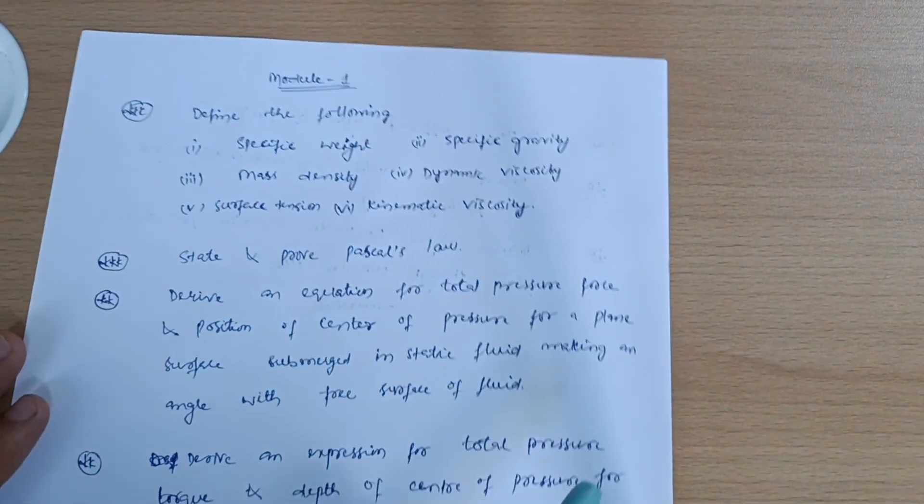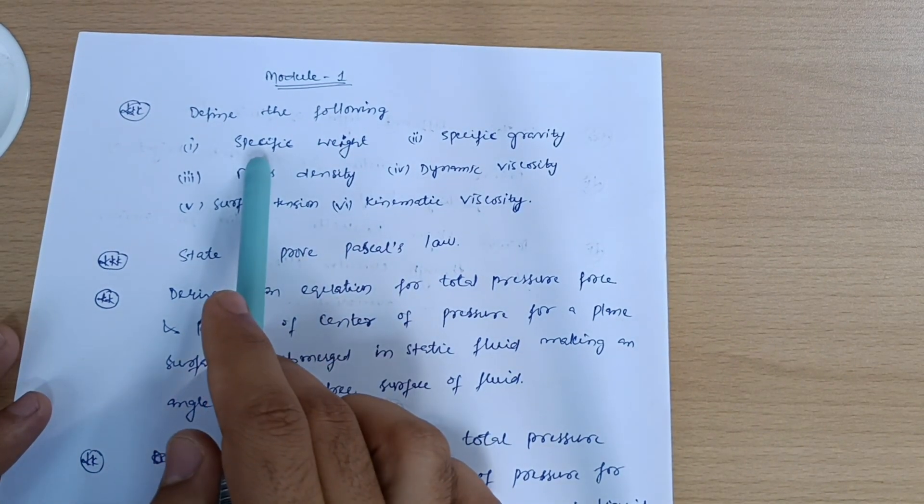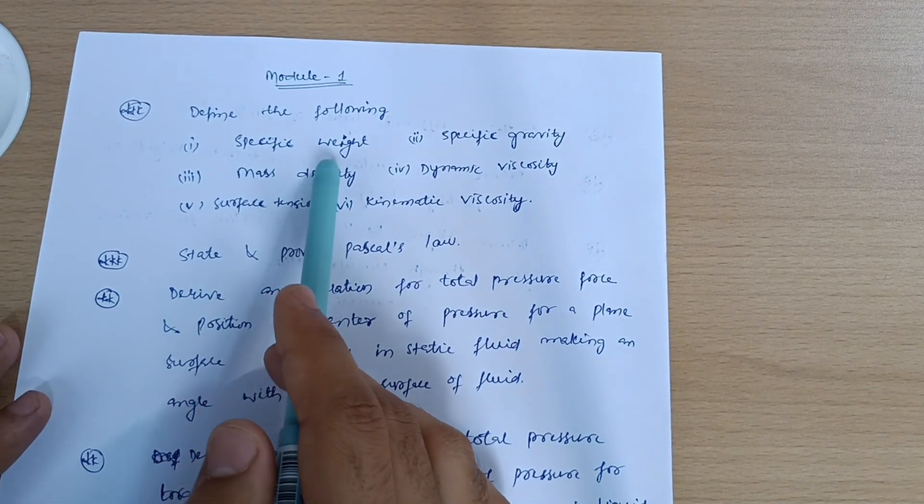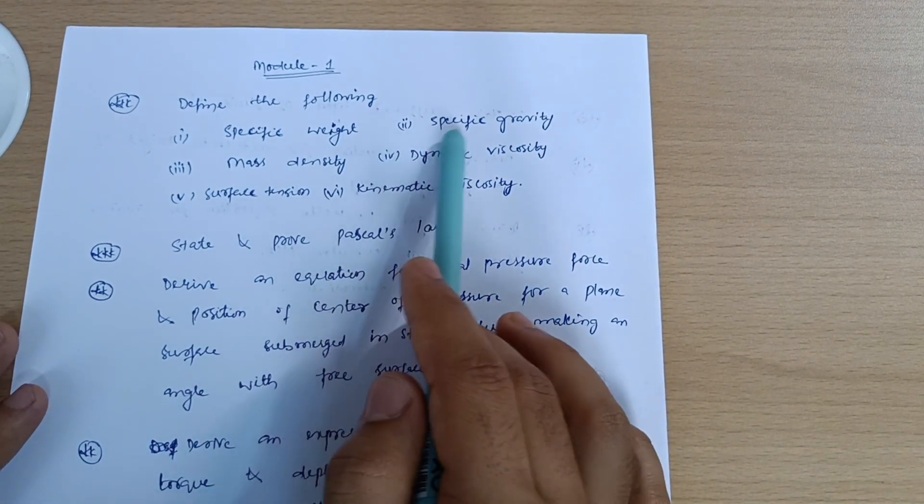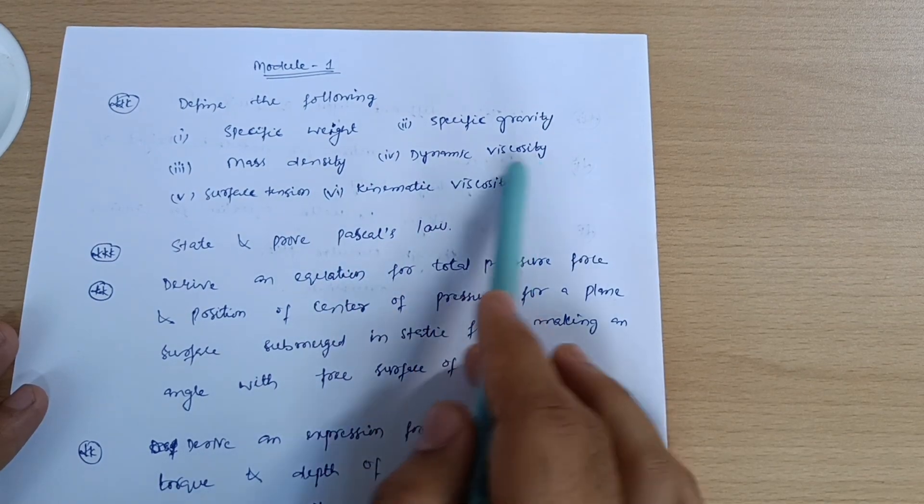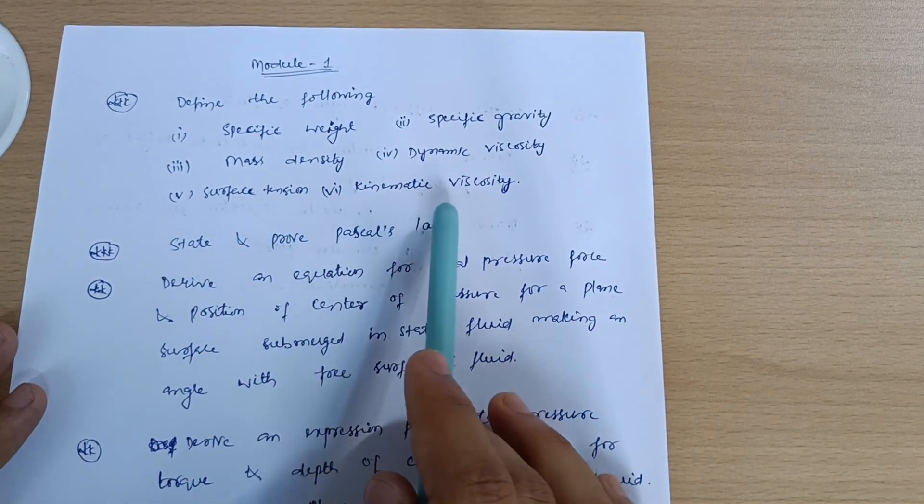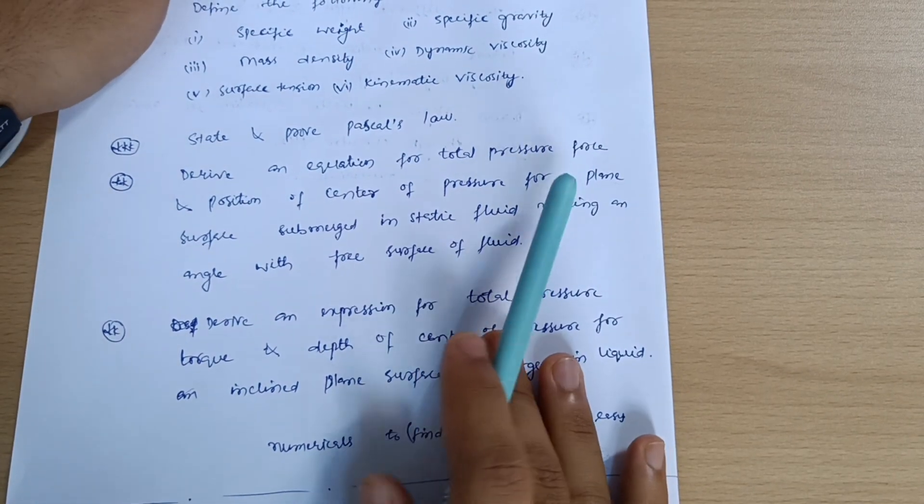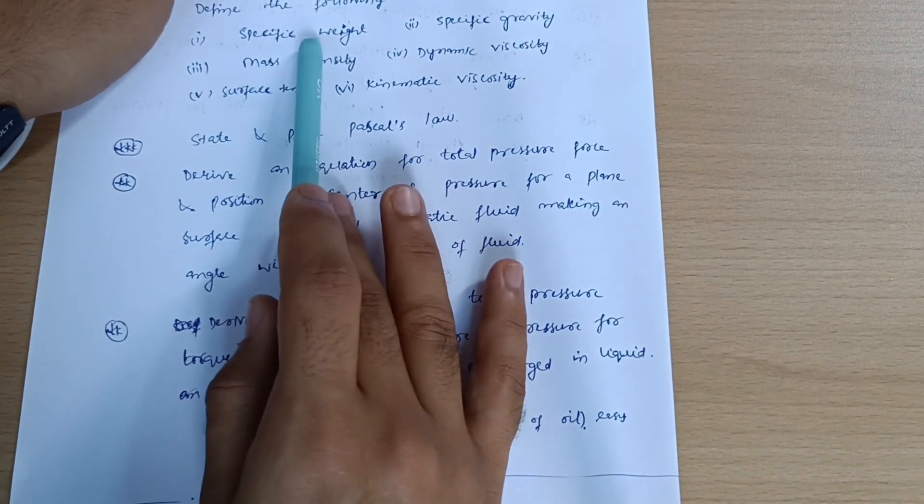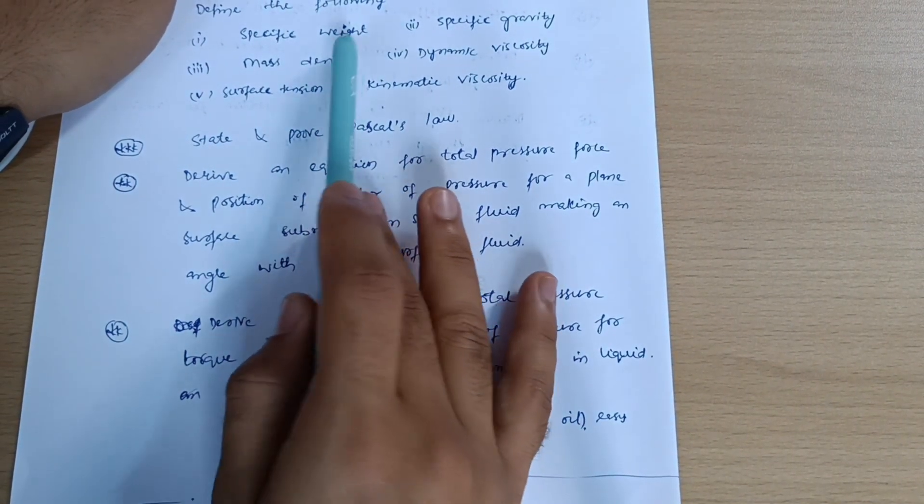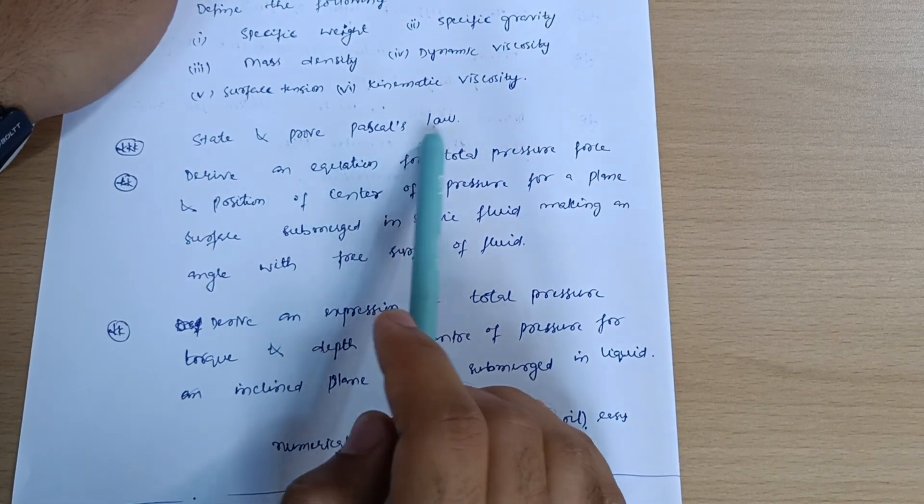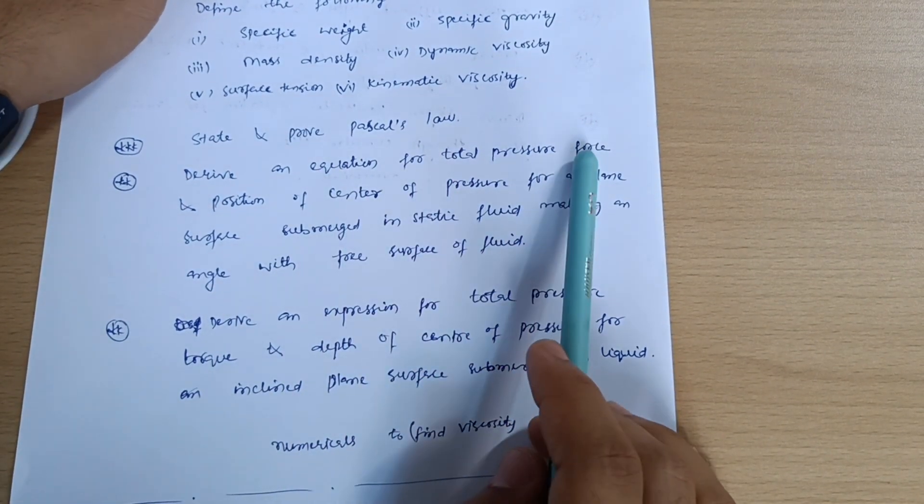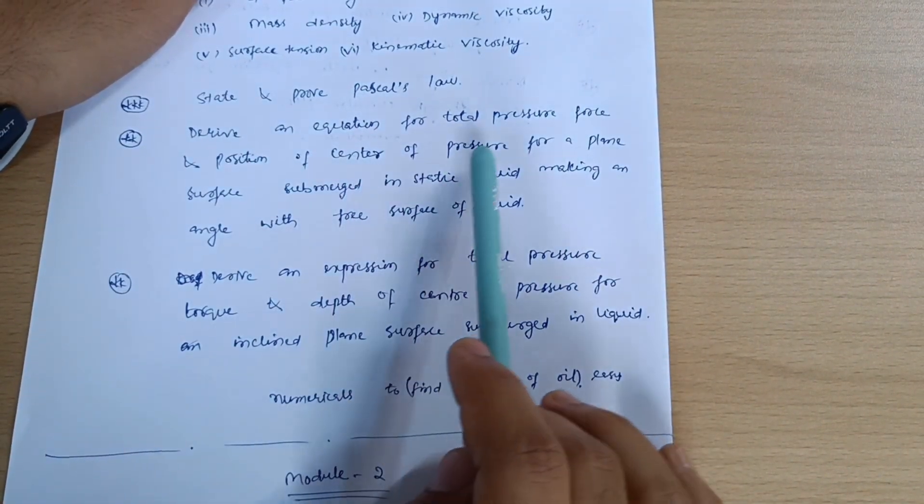Let us discuss now Module 1. In Module 1, you have to go through define the following - these are the properties: specific weight, specific gravity, mass density, dynamic viscosity, surface tension, kinematic viscosity. Go through these small definitions and also try to write down the equation for each property over here.